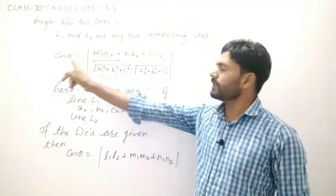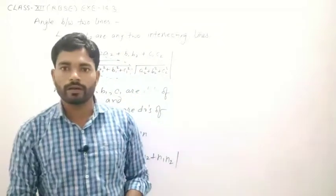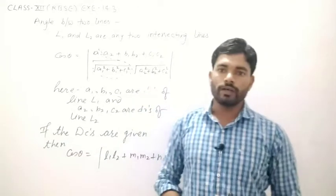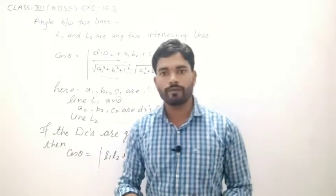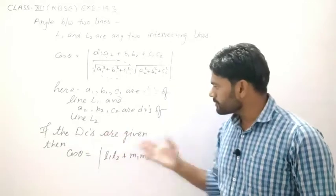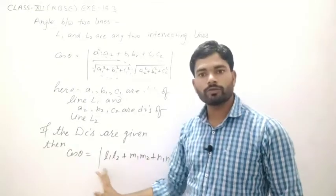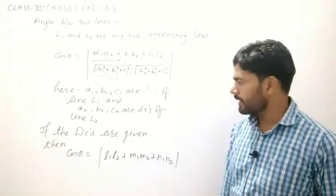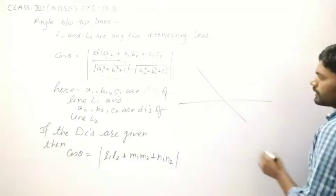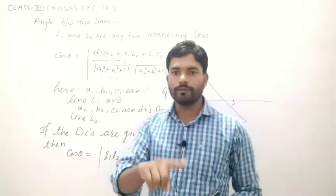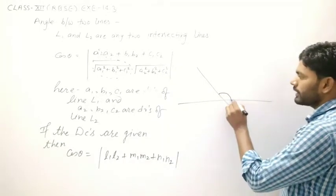To summarize: if direction ratios are given, then cos θ = (a₁a₂ + b₁b₂ + c₁c₂) / (√(a₁² + b₁² + c₁²) × √(a₂² + b₂² + c₂²)). If direction cosines are given, then cos θ = |l₁l₂ + m₁m₂ + n₁n₂|. We always take the positive value, so if the result is negative, we consider its absolute value and the angle will be acute.